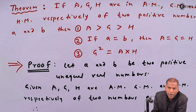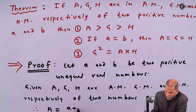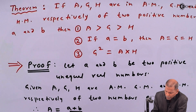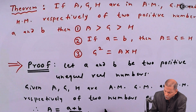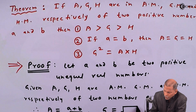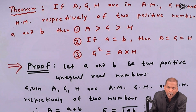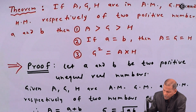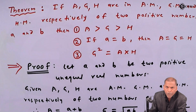Therefore, we must have arithmetic mean capital A equal to (a + b) / 2. The geometric mean capital G is equal to the square root of a·b, and harmonic mean capital H is equal to 2ab / (a + b).